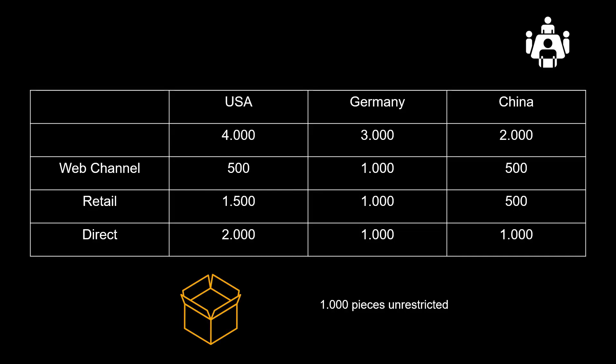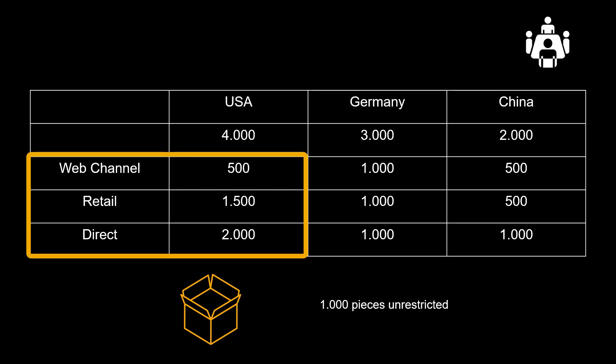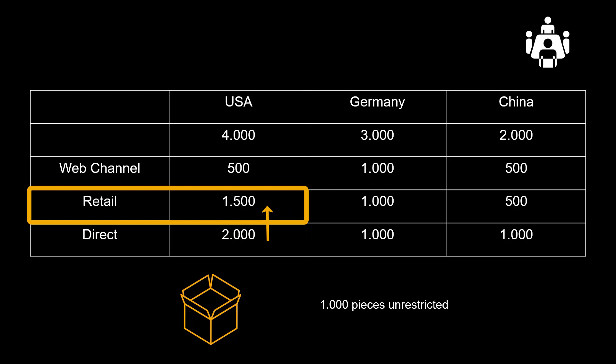When we now create our sales orders, there are three things which we need to consider. First, all sales orders are run in simulation mode, which means that the 1,000 pieces of unrestricted stock will be available in each example. Second, the horizontal protection, represented by the countries, are having the same level of priority — hence, there will not be a possibility to use stock protected for a different country. Third, the vertical protection, represented by the distribution channels, carries a difference in priority. This means that the web channel may take stock protected for retail or direct channels, and the retail channel may take stock protected for the direct channel.